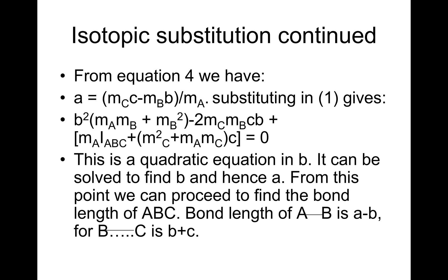This is a quadratic equation in B. It can be solved to find B and hence A. From this point, we can proceed to find the bond length of ABC. Bond length of AB is A minus B and the bond length of BC is B plus C.